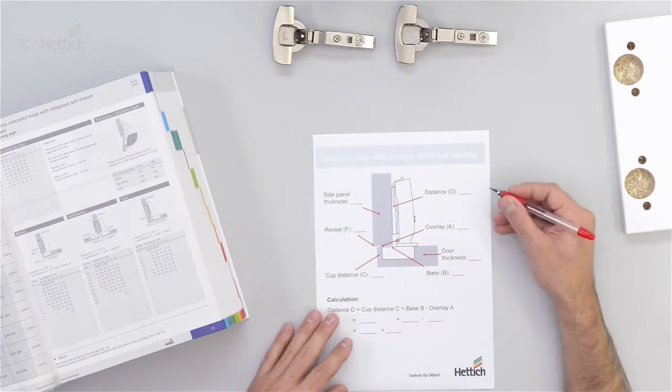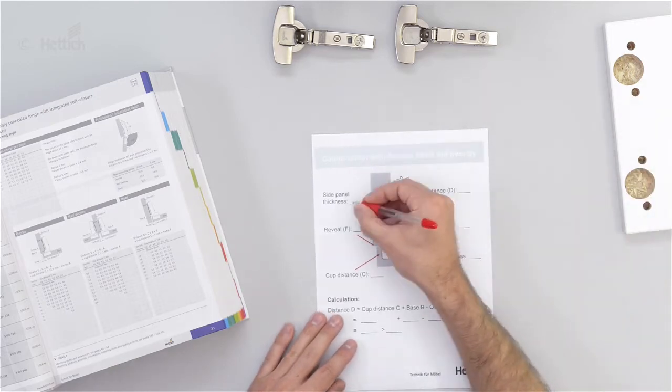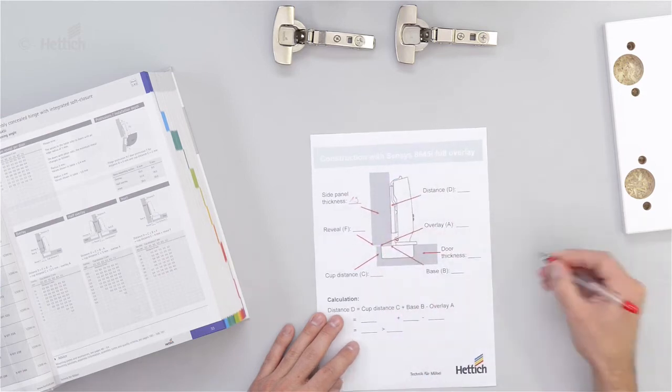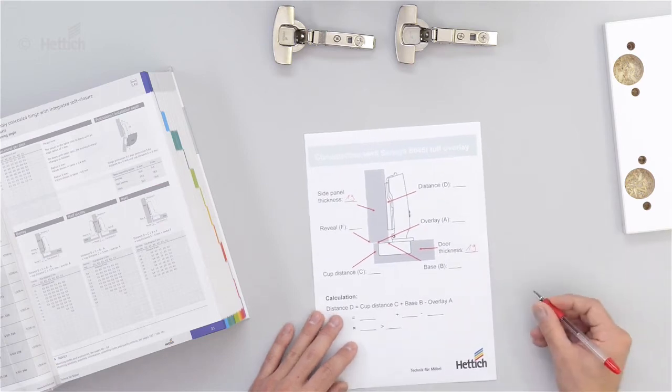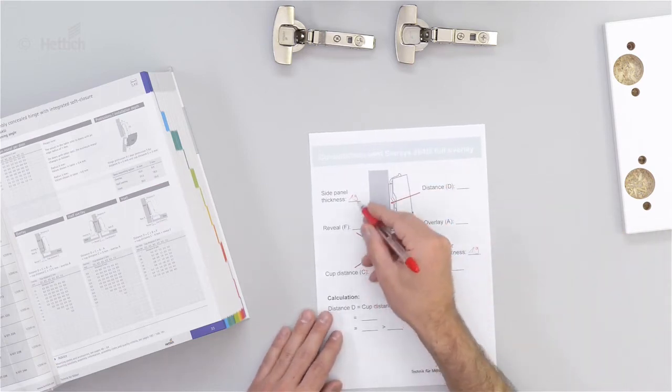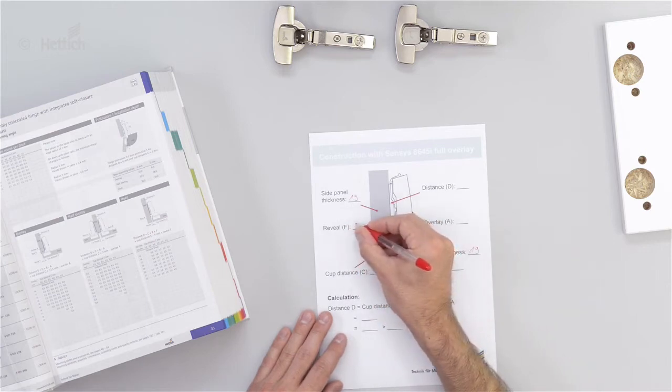So in this example, we calculate with a side panel thickness of 19 millimeters and a door thickness of also 19 millimeters. And we say the reveal is 3 millimeters.